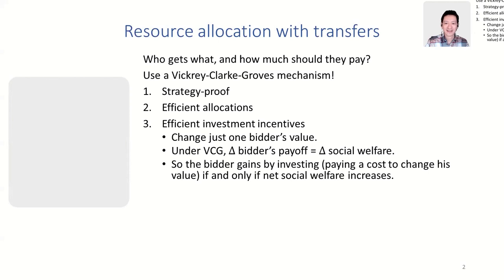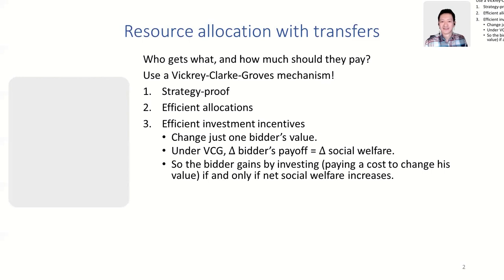Let's zoom back and think about a very classic setting: resource allocation with transfers. Think of some set of indivisible resources we want to distribute — deciding which airlines get to land on the runway today, or which TV stations get to broadcast after a spectrum auction. There is a standard classical answer for who should get what and how much they should pay, and that answer is essentially that we could use a Vickrey-Clarke-Groves mechanism.